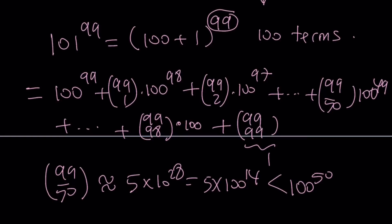And each of these terms, actually, is going to be less than 100 to the power of 99. Of course, with the exception of the first term, which is equal. But all the other terms are less. So the sum is going to be what we want.